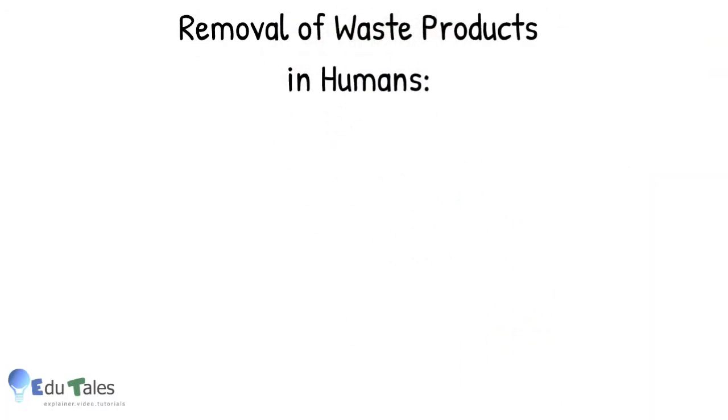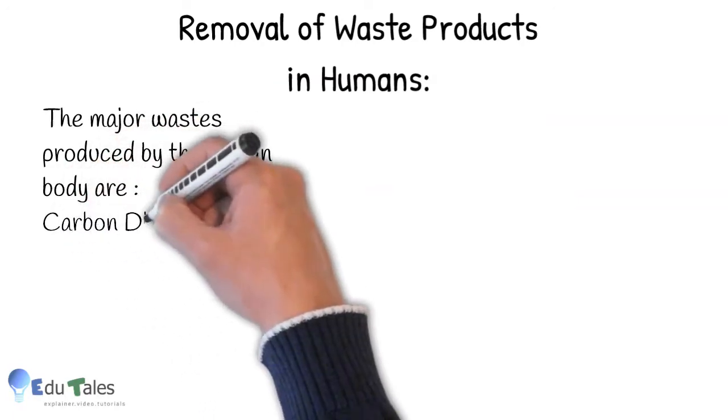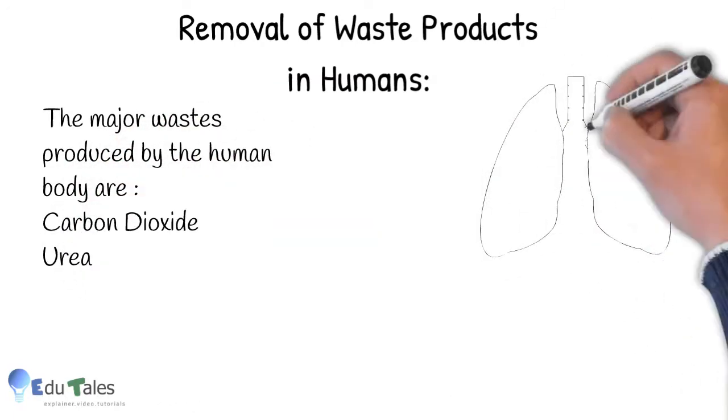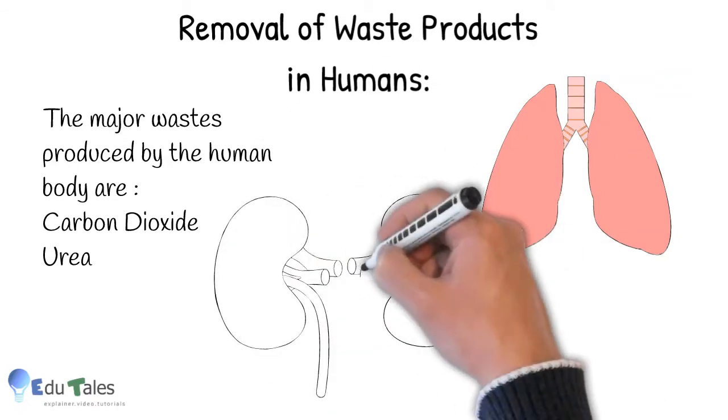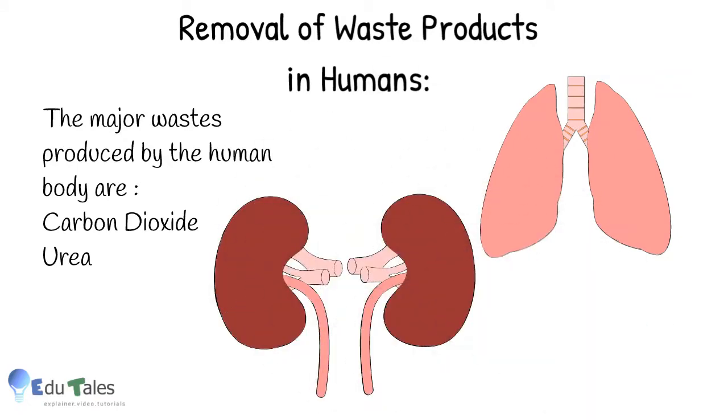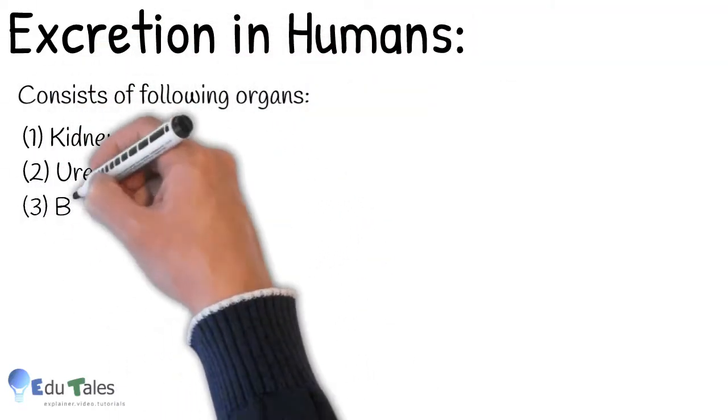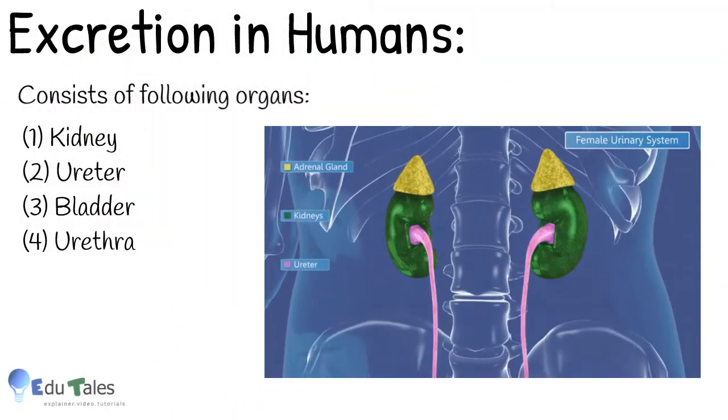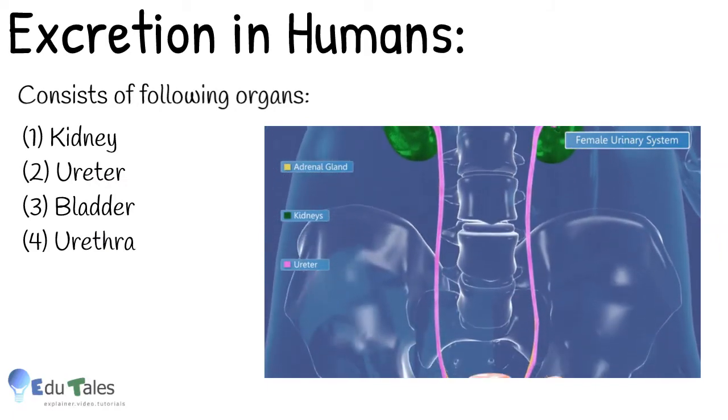Now let us see removal of waste products in humans. The major wastes produced by humans are carbon dioxide and urea. Carbon dioxide is removed by lungs during respiration, and urea is removed by kidney and entire excretory system. So let us see this excretory system. It consists of a pair of kidneys, a pair of ureters, urinary bladder, and urethra.